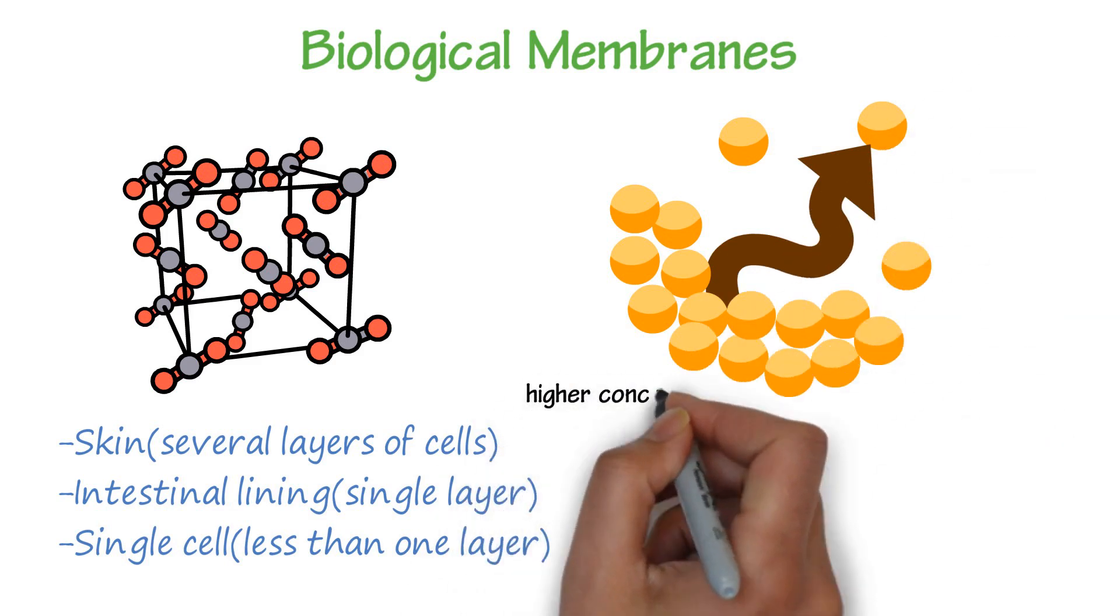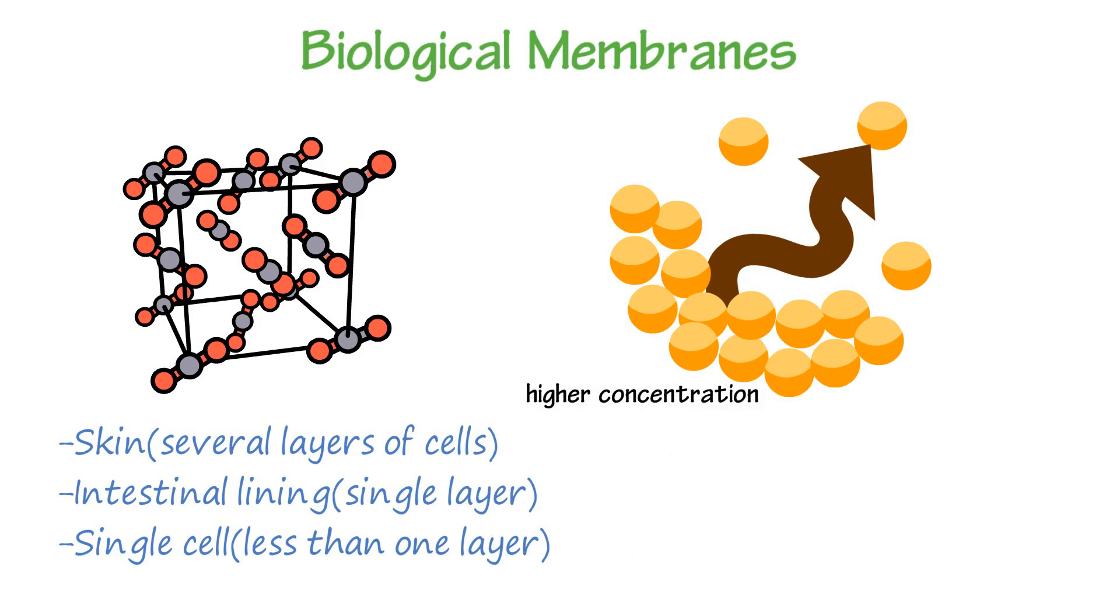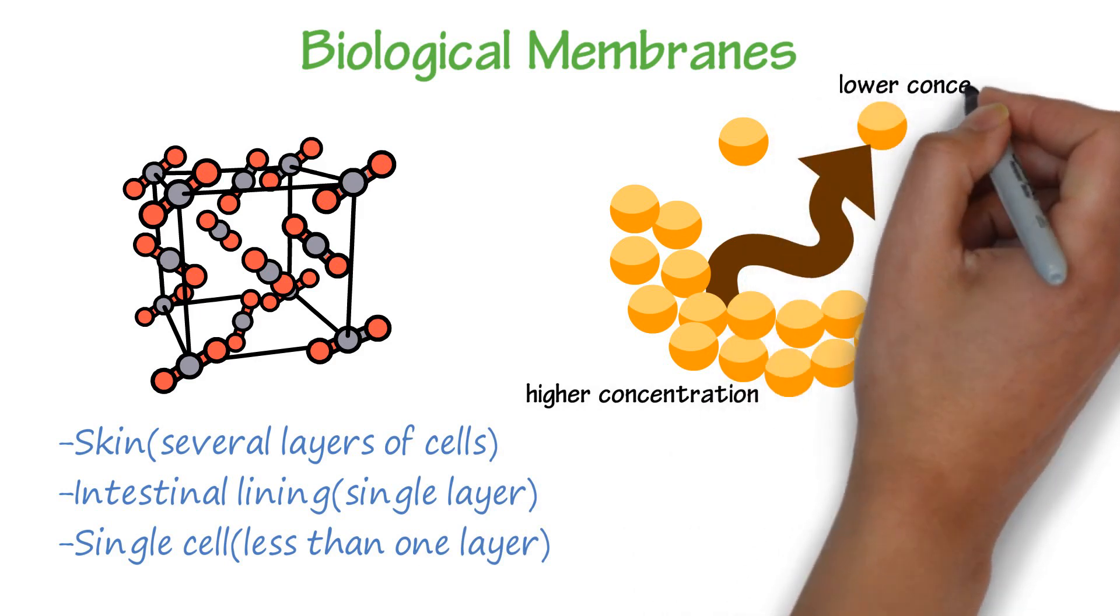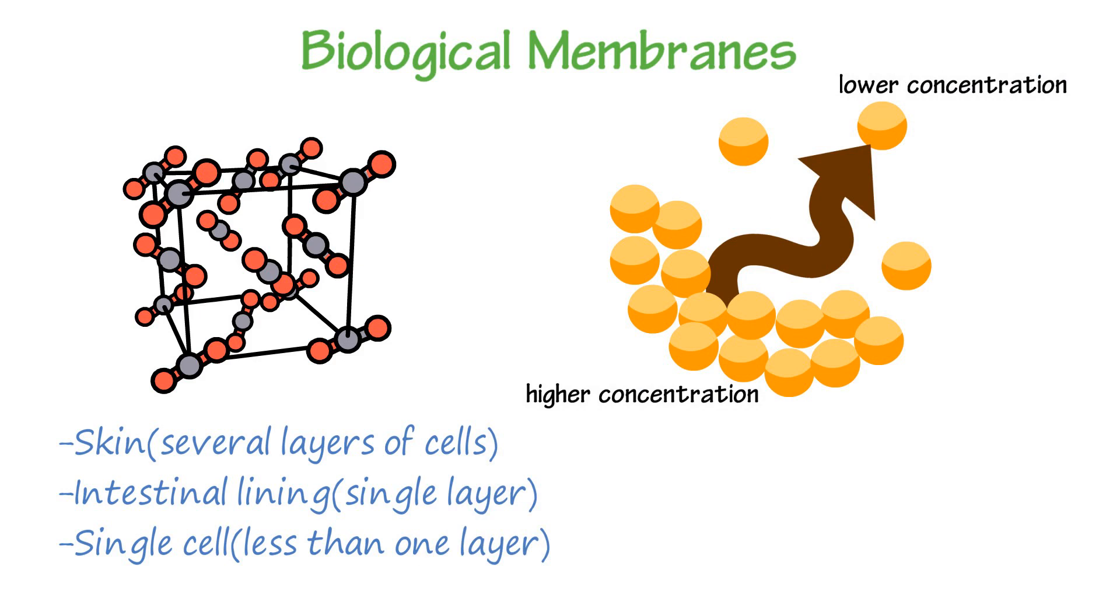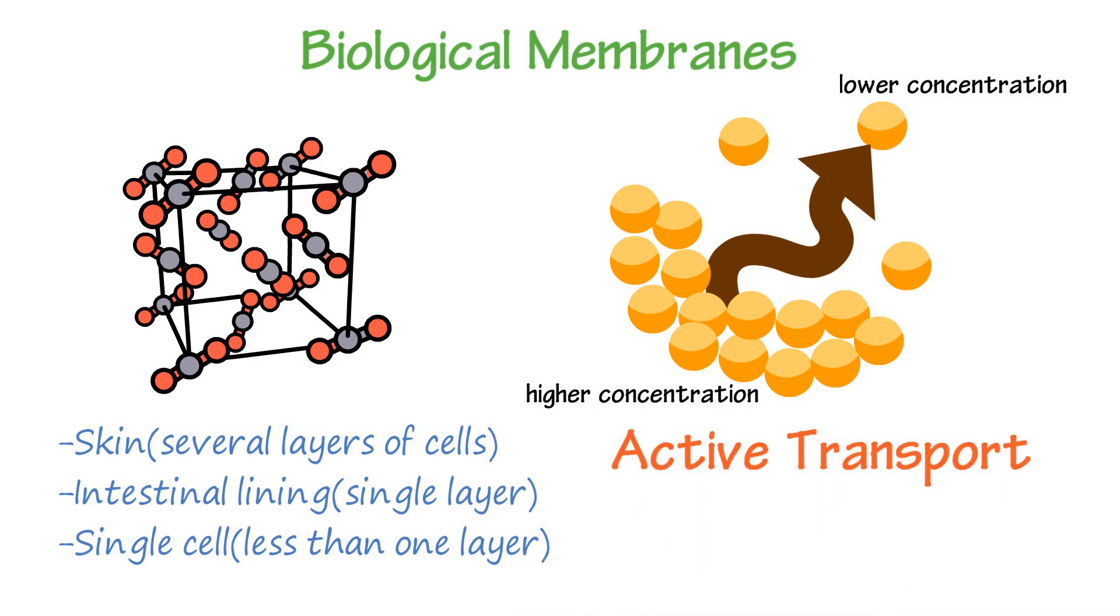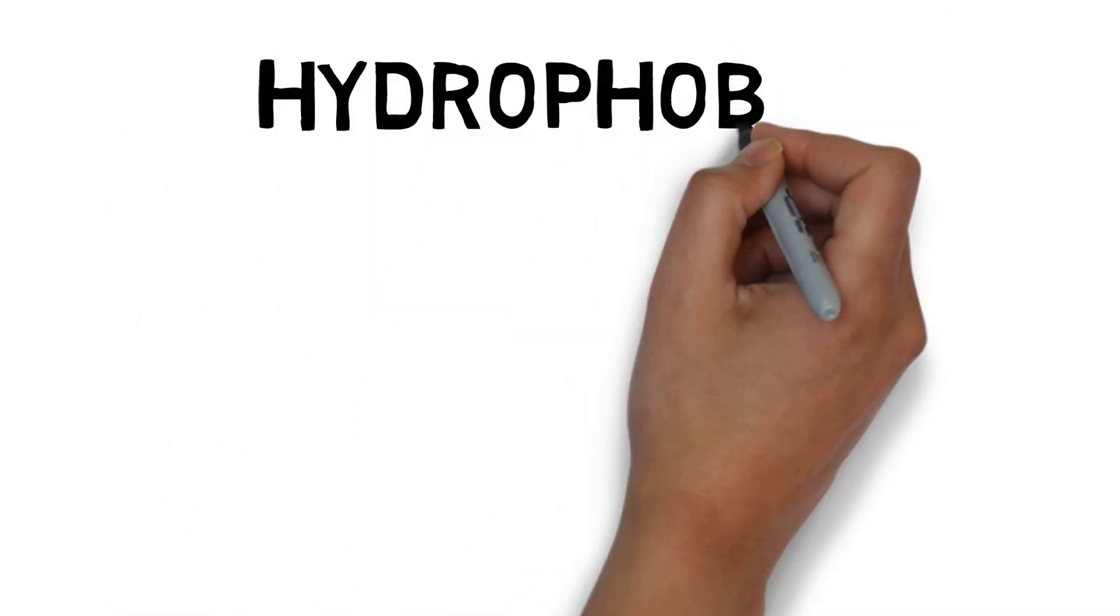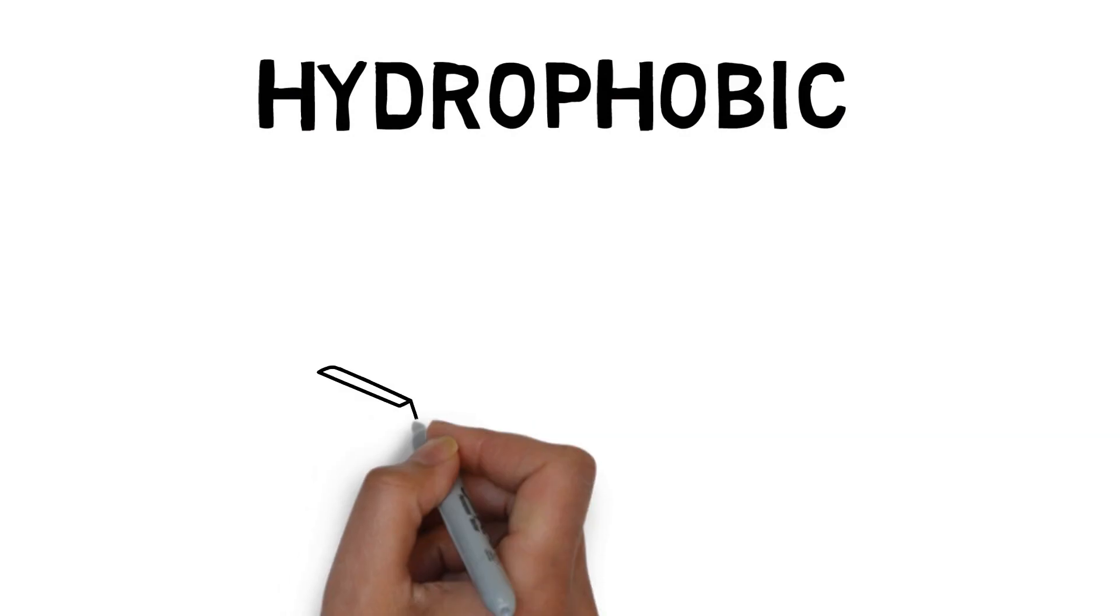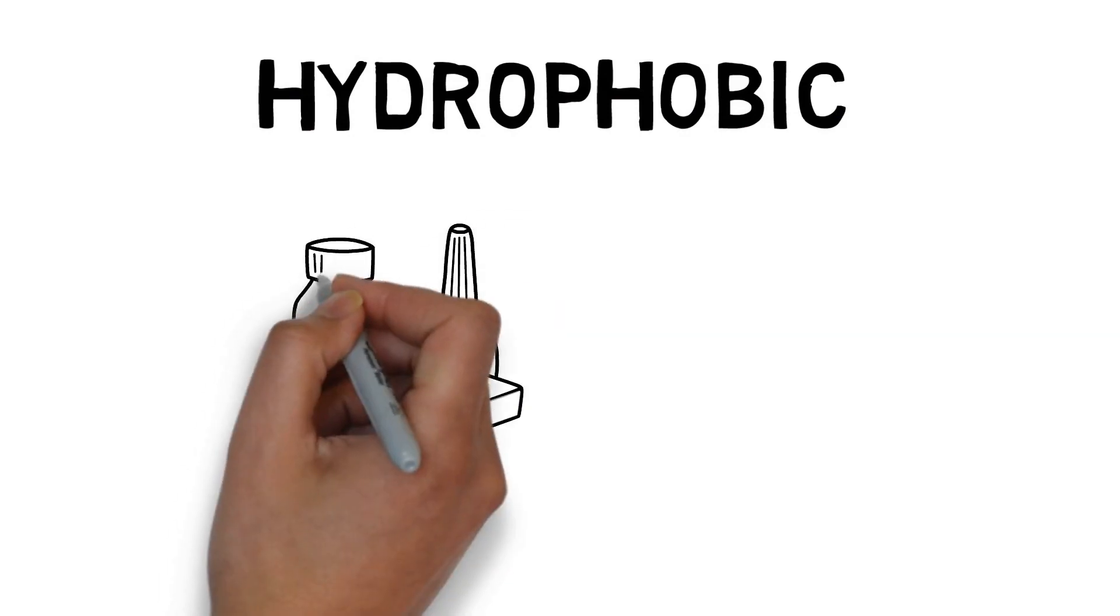Most drugs penetrate biological membranes by passive diffusion, the movement of drugs from an area of higher concentration to lower concentration. Other drugs penetrate by active transport, where cellular energy is used to move drugs from low concentration to higher concentration. Membranes are lipoidal, fat-like, aka hydrophobic. Drugs that are more lipid soluble will penetrate membranes better than drugs that are not.